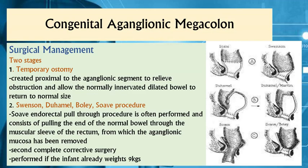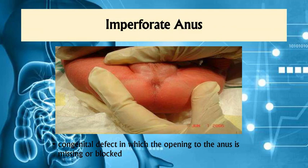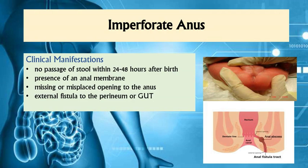Imperforate anus is a congenital defect in which the opening to the anus is missing or blocked — in simpler terms, a closed anus. The exact cause is not fully understood, but it is believed to be due to abnormal development of the rectum when the embryo is forming. Clinical manifestations include no passage of stool within 24 to 48 hours after birth, a presence of an anal membrane due to pressure over the site, no observable anal opening, and fluids being diverted to other parts of the body.